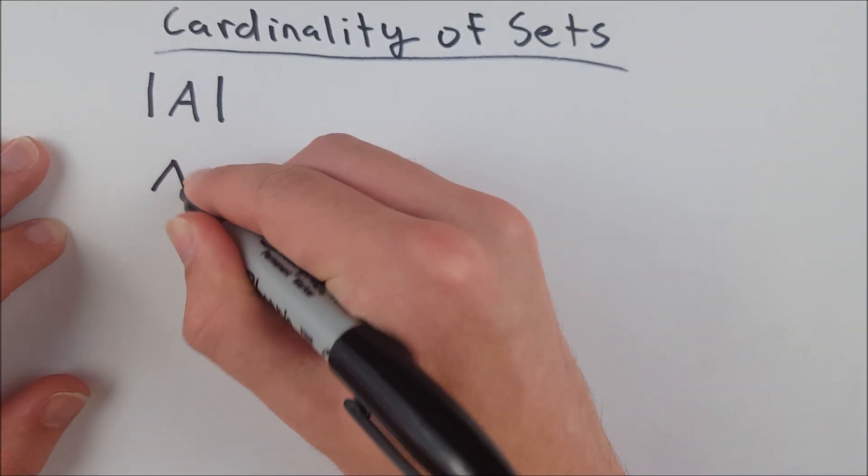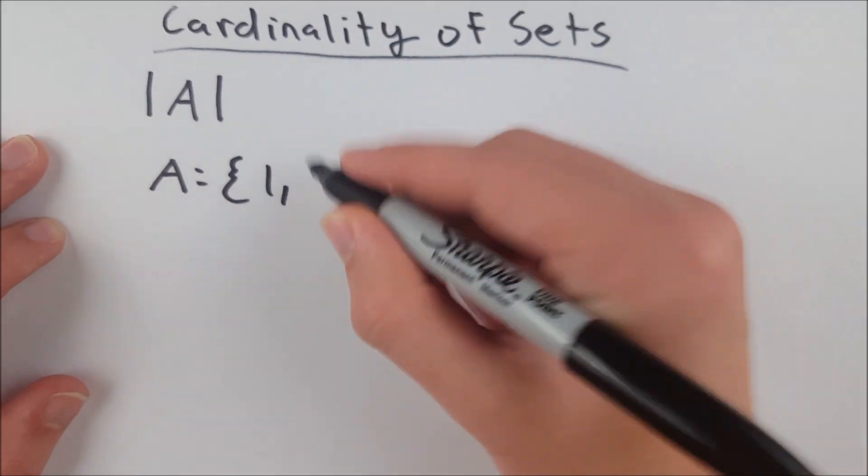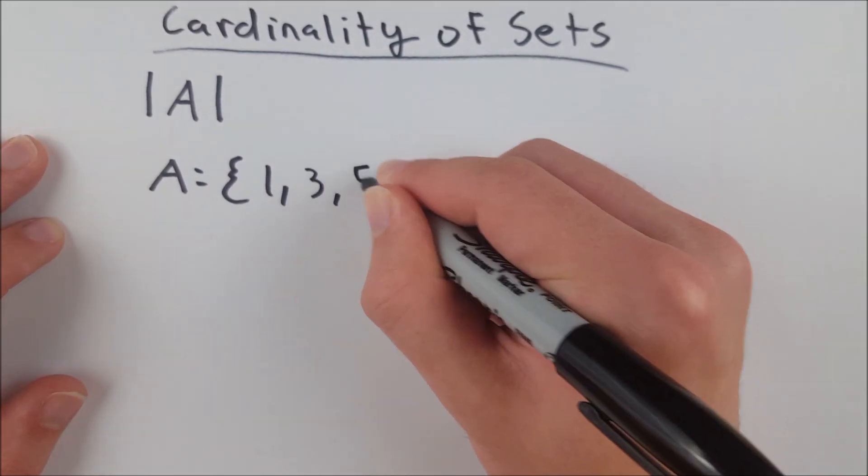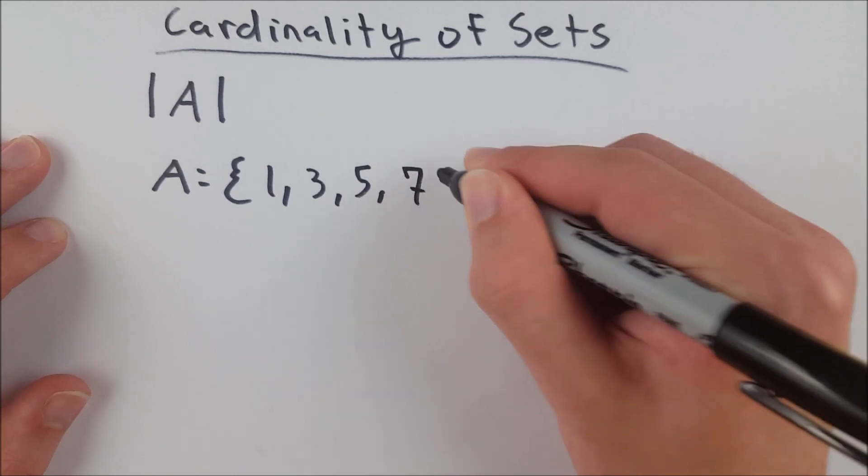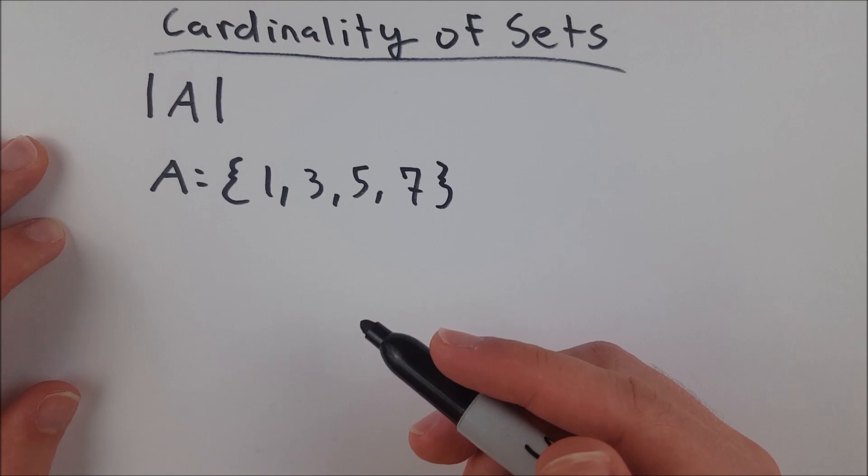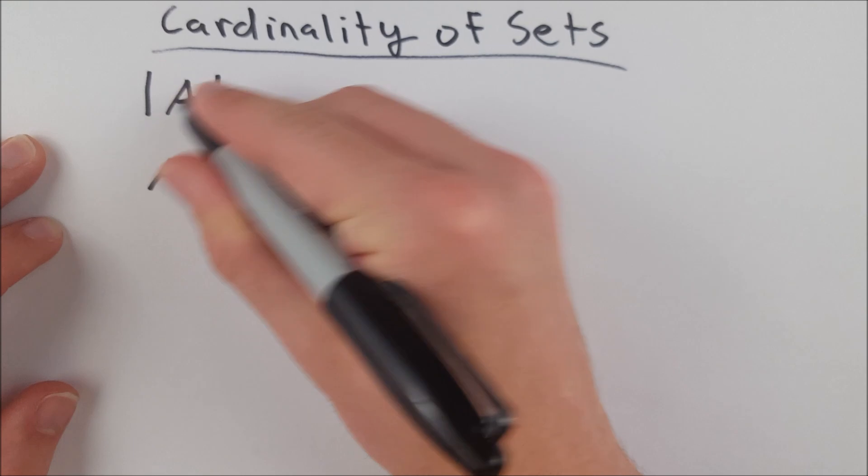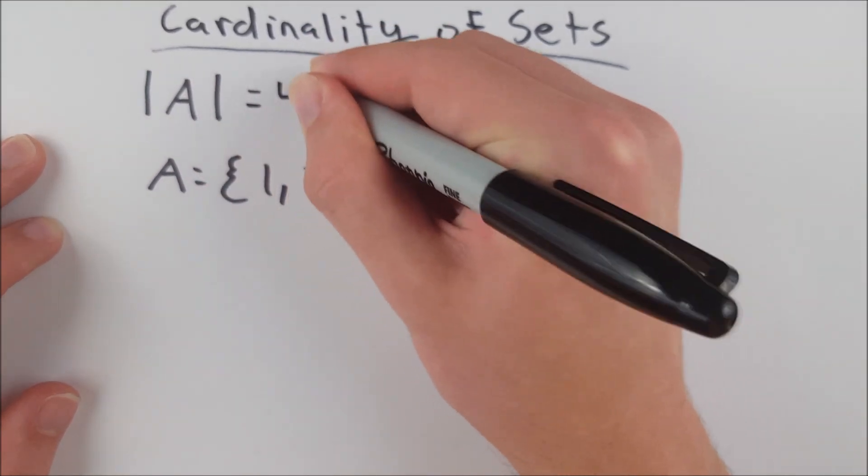Well, let's say that A is equal to the set containing, let's just say 1, 3, 5, and 7. The cardinality of a set is simply the number of elements in the set. So in this case, it's 1, 2, 3, 4. So the cardinality of A is equal to 4.